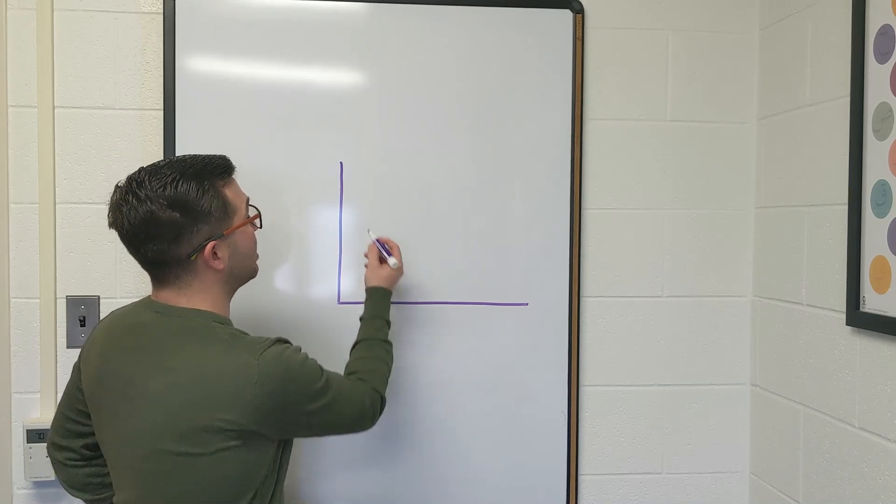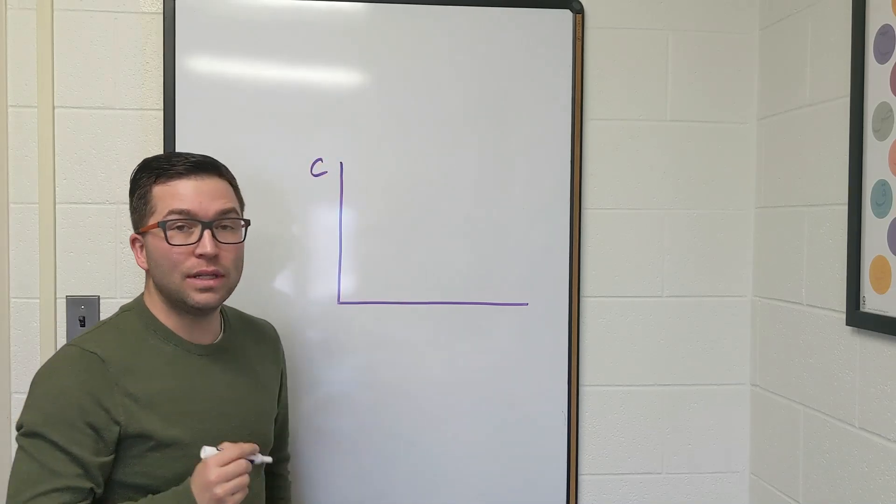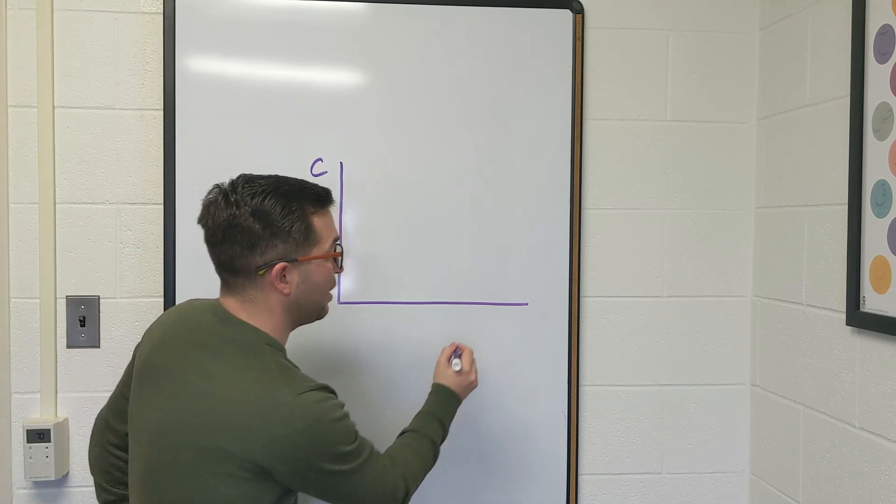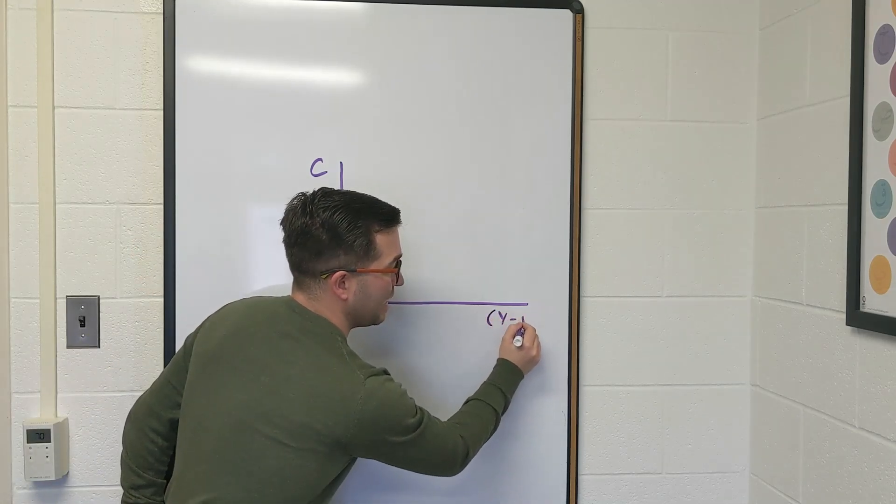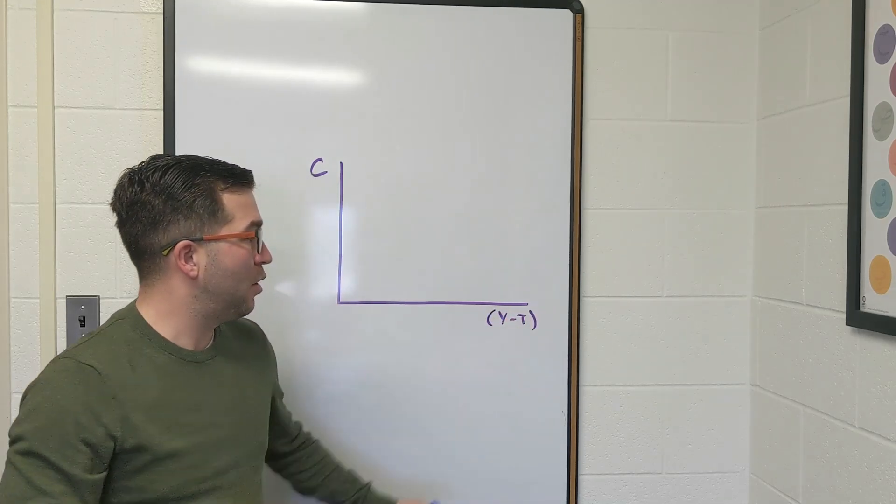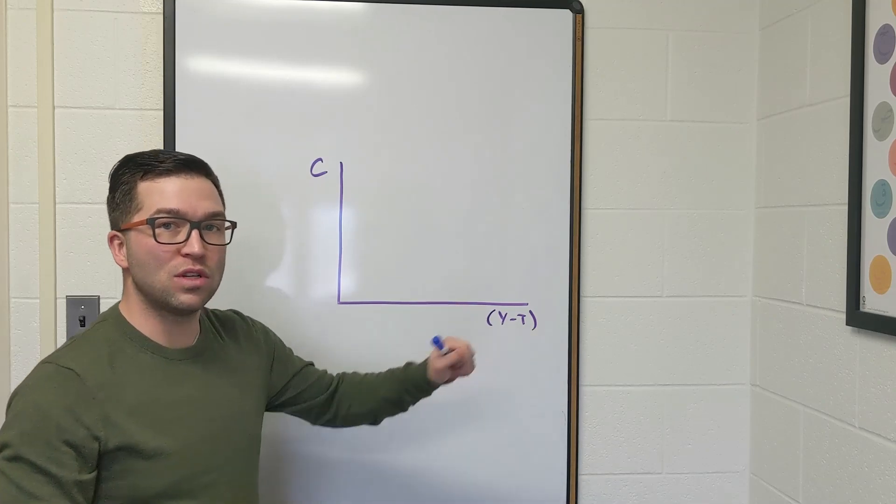What that means is we're going to put consumption, denoted c, on this vertical axis and disposable income, which is income minus taxes, denoted as y minus t, here on the horizontal axis.